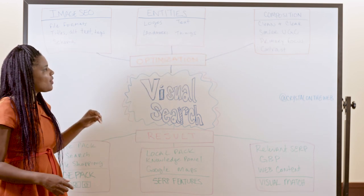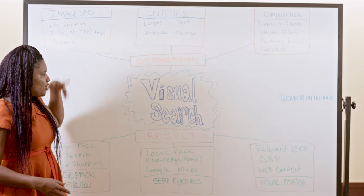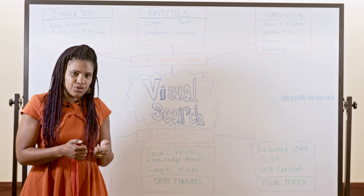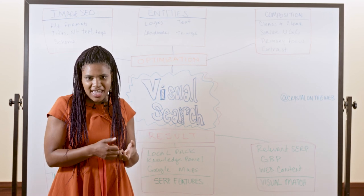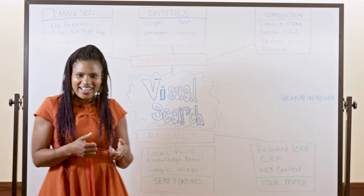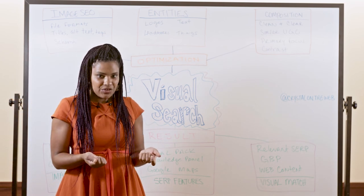And as users carry out a visual search, so for instance, if you use Google Lens and you take a picture of a butterfly or a caterpillar or a flower or a chocolate donut, you're going to get lots of different types of results.